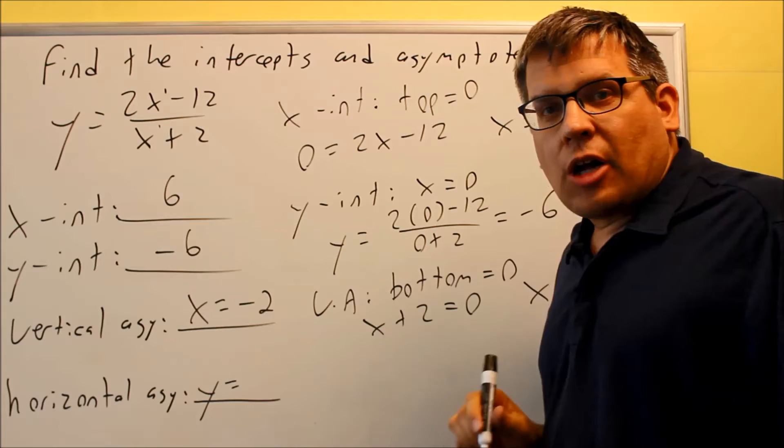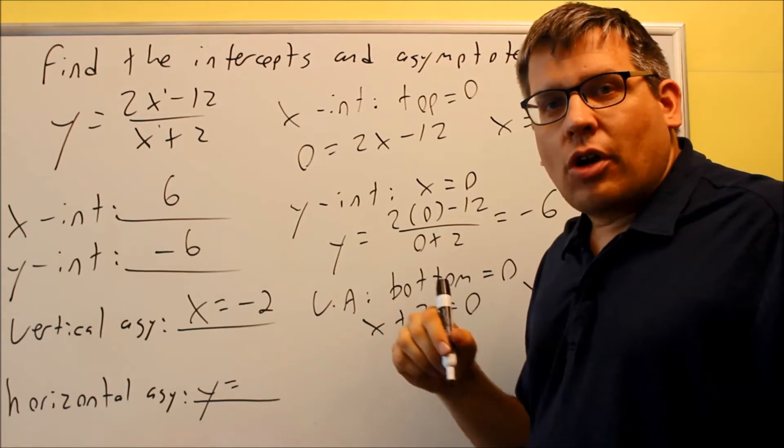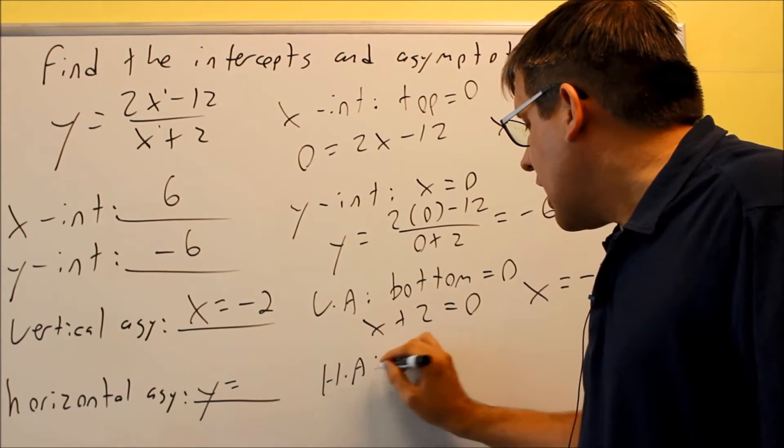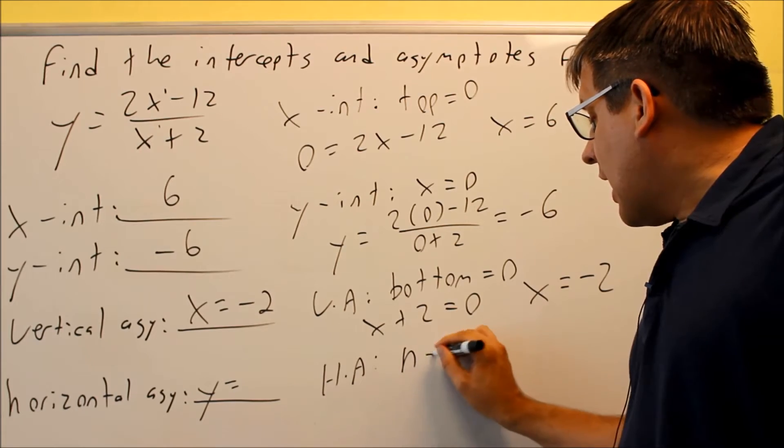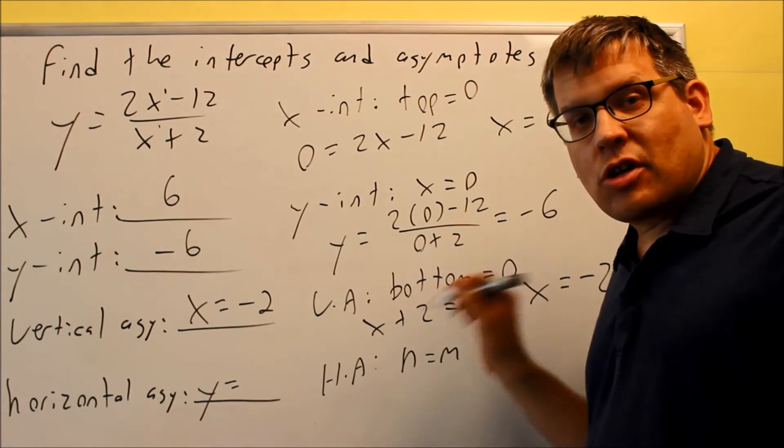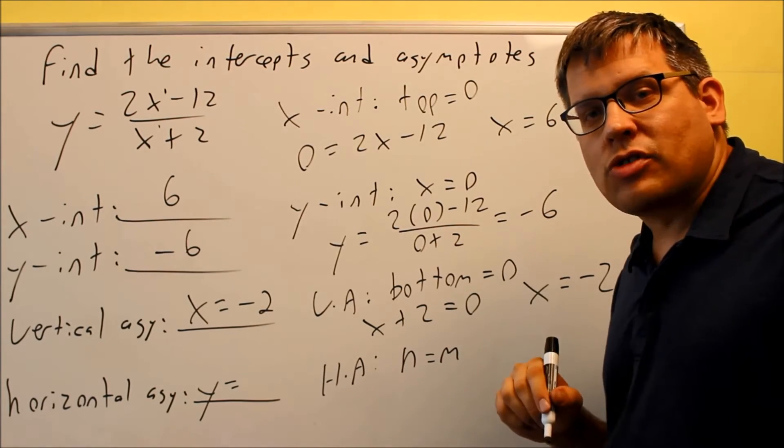The highest power on the bottom is called m. So I give three different conditions in notes for n and m, and we're comparing those. Now for the horizontal asymptote in our case, we have that the highest power on top, the n, is equal to the highest power on the bottom, that's our m. So n equals m, that's the second rule that's in the notes if you take a look at those.